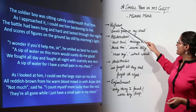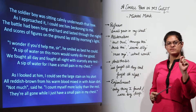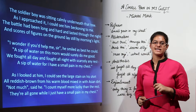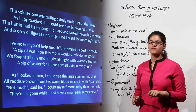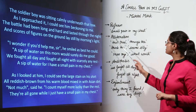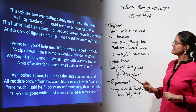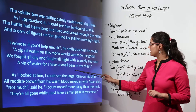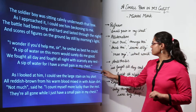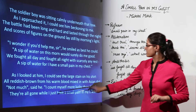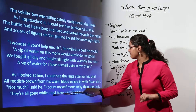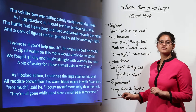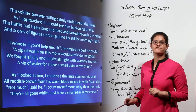The first is refrain. Refrain is when the same sentence is repeated multiple times throughout the poem. In the poem we see that the phrase 'a small pain in my chest' is repeated multiple times. As you can see here: 'a sip of water for I have a small pain in my chest' and 'they are all gone while I just have a small pain in my chest.' We have more such examples in the rest of the poem.